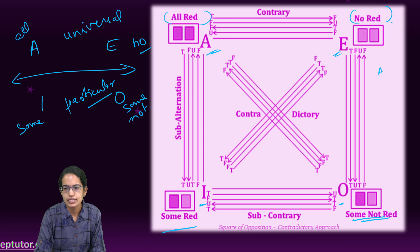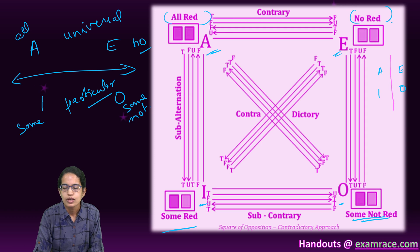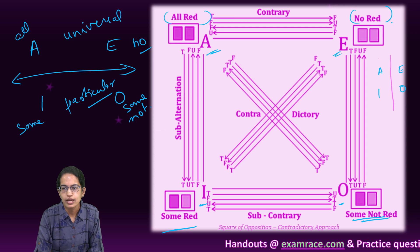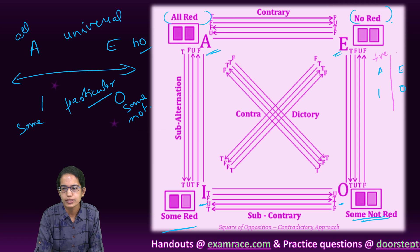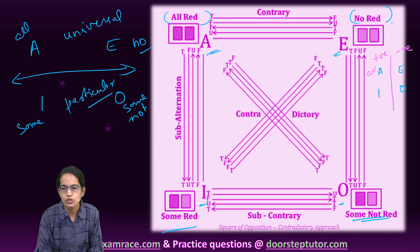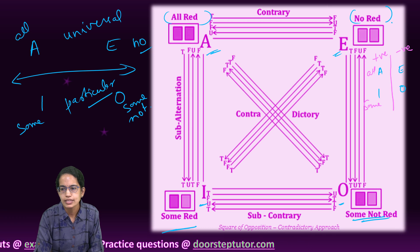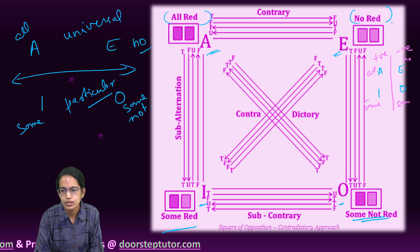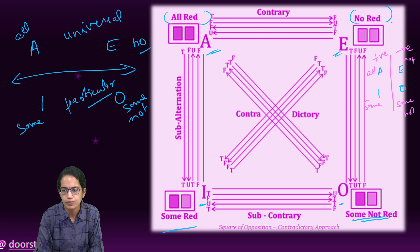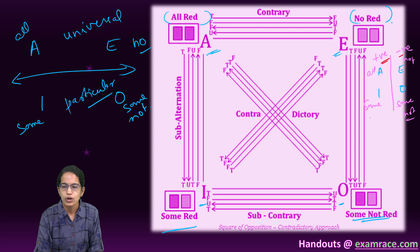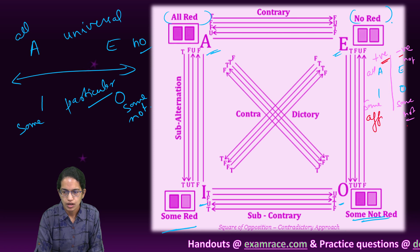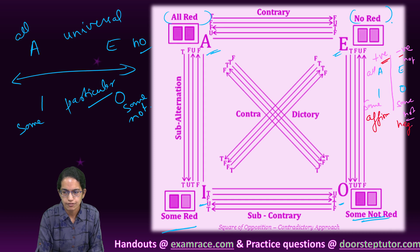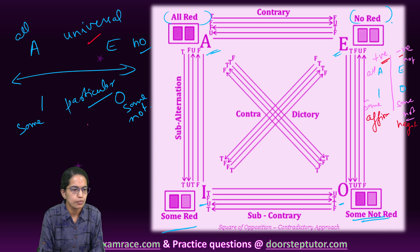The vertical segregation is A, E, I and O. I segregate it vertically. So when I segregate it vertically, I have positive elements versus negative elements. So this is all and some, and this is no and some not. We can remember it as that. So this is positive driven and this is negative. So that can be called as affirmative and negative. Affirmative and negative, and universal and particular.